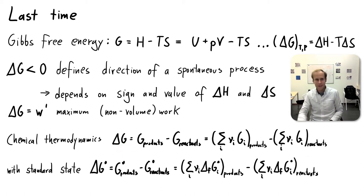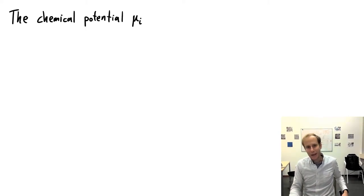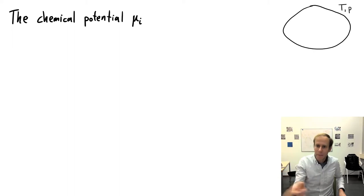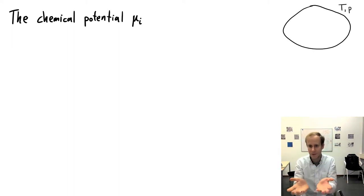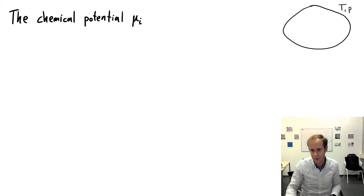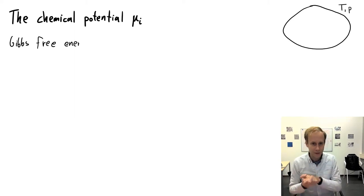Now let's go into the new content. This week I'm introducing the so-called chemical potential µi. Let's do this on an example. I'm drawing here a cell — the cell membrane that encapsulates the interior of the cell at a certain temperature and pressure. It could also be a potato; it looks quite similar. When we want to calculate a change of the Gibbs free energy, we can use partial derivatives.